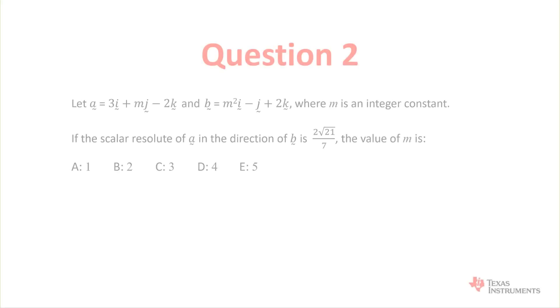Question 2: Let a equal 3i plus mj minus 2k and b equals m squared i minus j plus 2k where m is an integer constant. If the scalar resolute of a in the direction of b is 2 root 21 on 7, the value of m is...